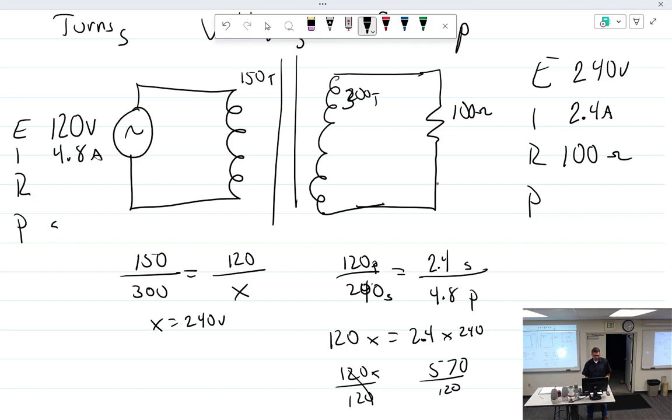Let's do our power. How many watts? 576. So how much power over here? 576. Because it should be. Cannot create power.